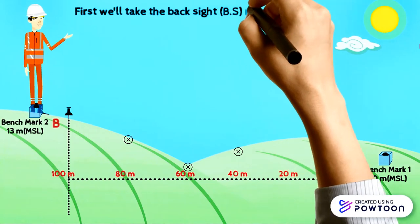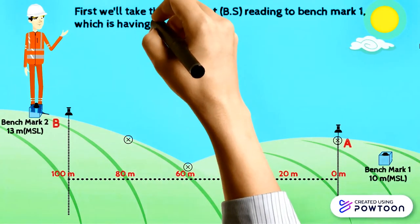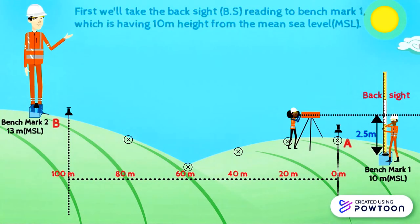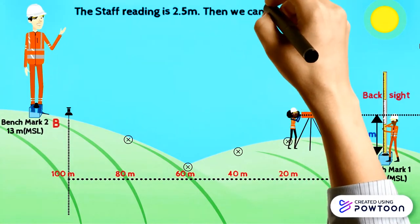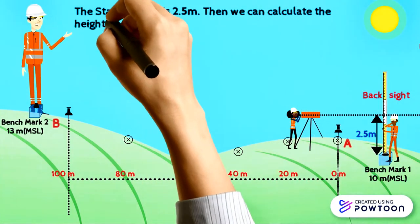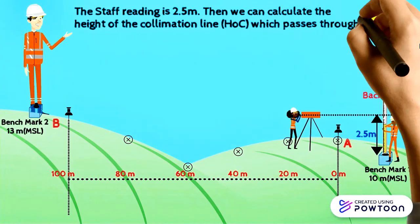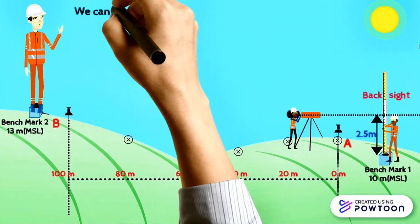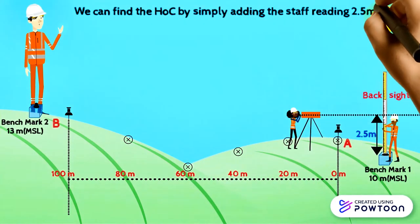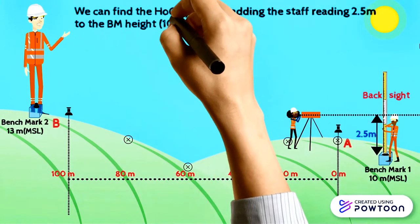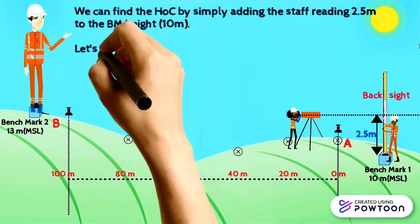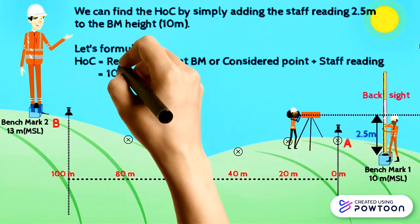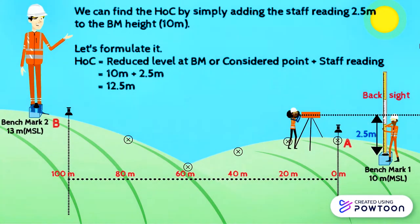First, we'll take the backsight reading to benchmark 1, which is 10 meters above mean sea level — the staff reading is 2.5 meters. We can then calculate the height of collimation of the line passing through the telescope by adding the staff reading 2.5 meters to the benchmark height 10 meters. The formula is: Height of Collimation = Reduced Level at benchmark + staff reading. The answer is 12.5 meters.